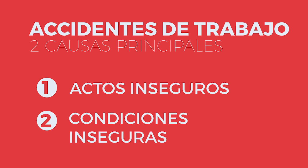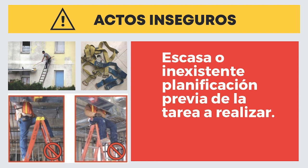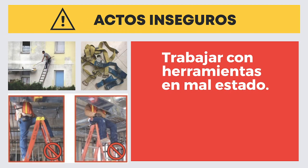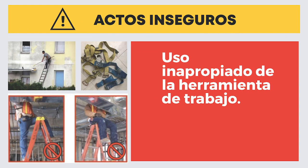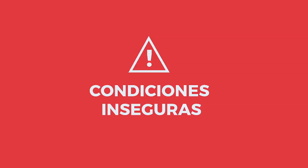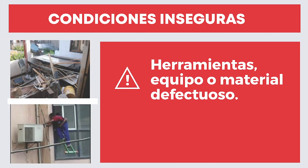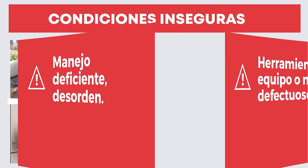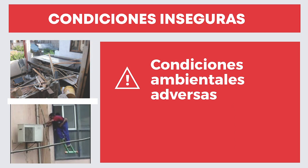Los accidentes de trabajo se dan por dos causas principales: actos inseguros y condiciones inseguras. Actos inseguros: no utilizar los elementos de protección personal requeridos para cada trabajo; escasa o inexistente planificación previa de la tarea a realizar; trabajar con herramientas en mal estado; uso inapropiado de la herramienta de trabajo. Condiciones inseguras: falta de herramientas para la ejecución de las tareas; herramientas, equipo o material defectuoso; manejo deficiente; desorden; condiciones ambientales adversas.